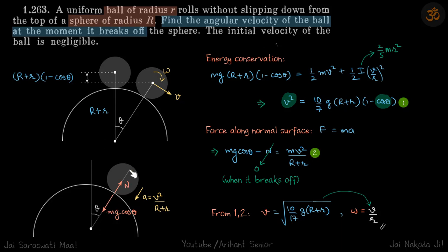mg cos θ in this direction—so forces we are writing in this direction only. So towards center it was mg cos θ, and away it was normal reaction. And what is the acceleration? Because when it breaks off, just before that, it's still traveling in this circular motion.